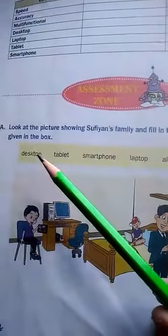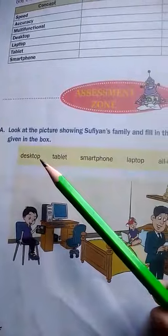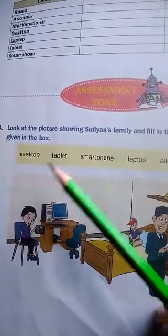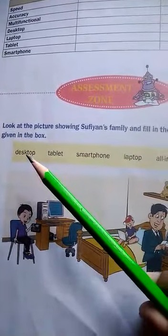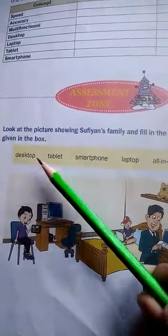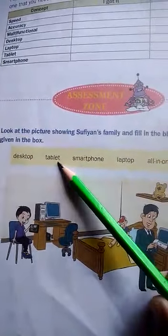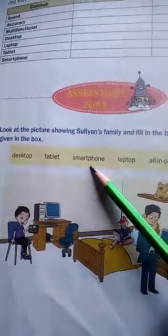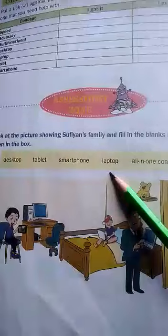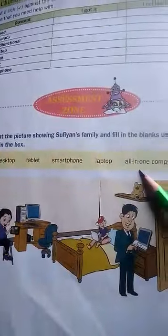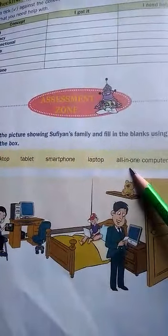First of all, we will read our words from the yellow box: desktop, tablet, smartphone, laptop, all-in-one computer.